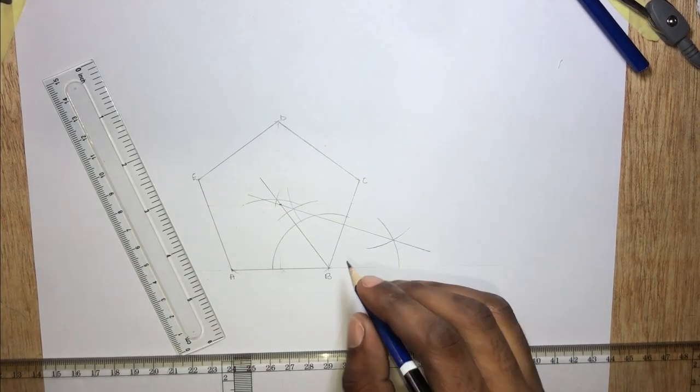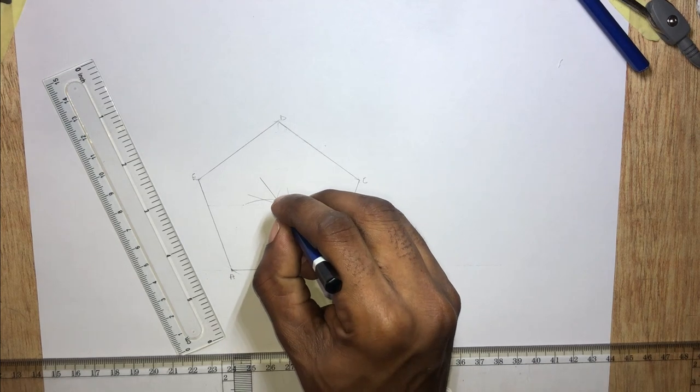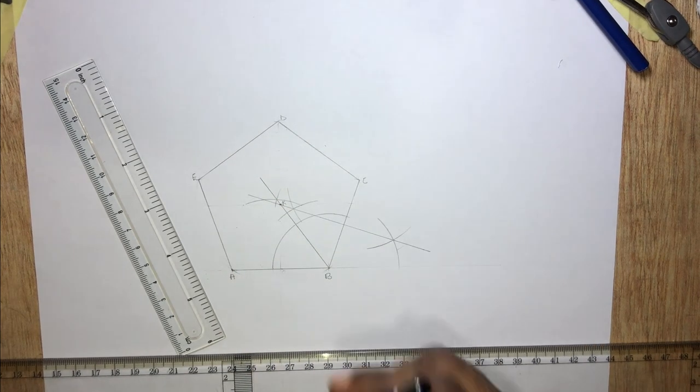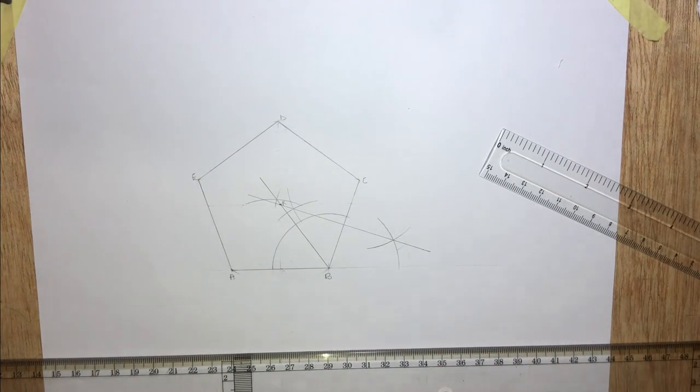So we have the intersection of these lines to be K. Now what we'll do is to draw that circle with K as the center.